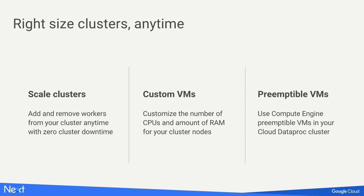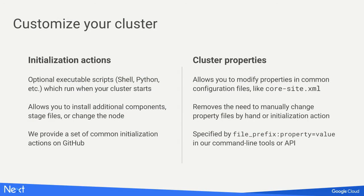You can scale clusters at any time, use custom VM types for master and worker nodes, and use preemptible nodes. Initialization actions are scripts — shell, Python, or Ruby — run after services start on the cluster, useful for staging jars, copying data locally, or installing Presto. We also have a mechanism through our client tooling to set properties in cluster configuration files like core-site.xml without needing to SSH in or write an initialization action.